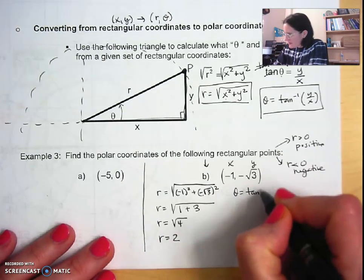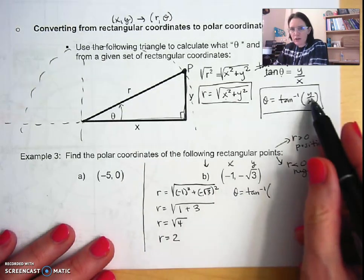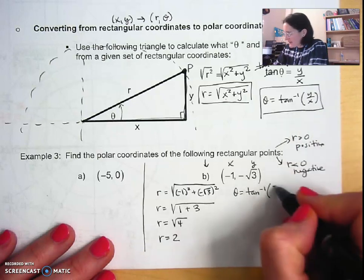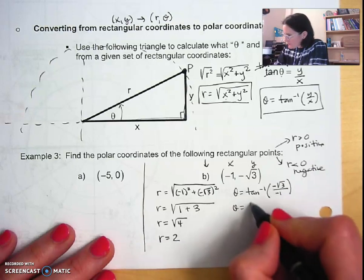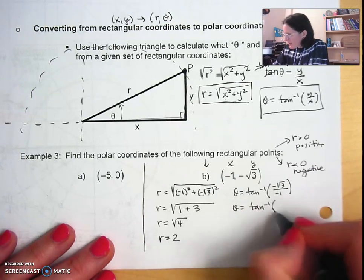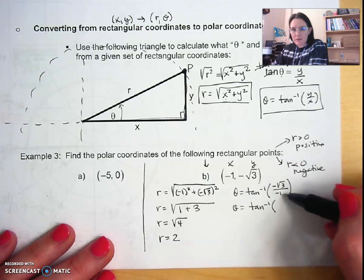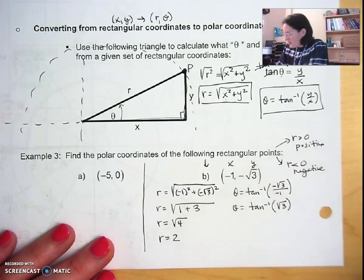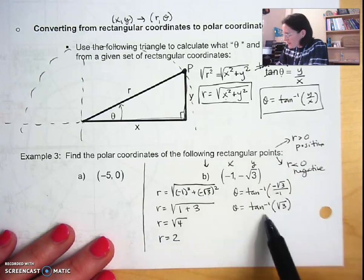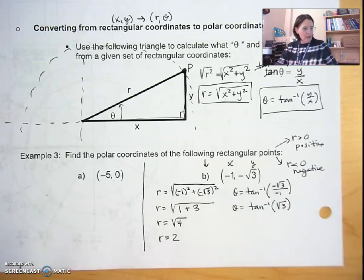And then to calculate theta, theta is equal to arctan of y over x. My y is negative rad three over x is negative one. Negative divided by negative is positive rad three over one, which is just rad three.